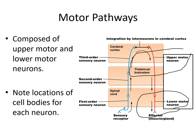Notice that the cell bodies of the motor neurons differ in location. The cell body of the upper motor neuron is in the cerebral cortex, and the cell body of the lower motor neuron is in the spinal cord. In contrast, for sensory pathways, we had cell bodies in the peripheral nervous system, the spinal cord, and the thalamus or brainstem.